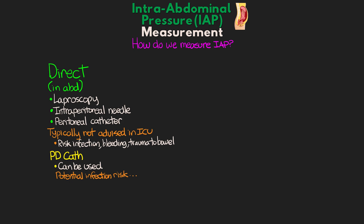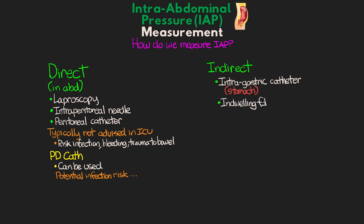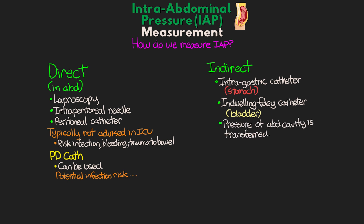The other way that we can get an intra-abdominal pressure is through an indirect measurement. To do this, we can use either an intragastric catheter in the stomach or an indwelling Foley catheter in the bladder. Since both of these are located in the abdominal cavity, the pressure of that cavity is transferred to them and thus we can measure it there. That said, the gold standard is the use of a Foley catheter and the measurement of the bladder pressure.